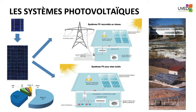Generally speaking, there are two types of photovoltaic systems. The first are those connected to the grid, where the energy is injected into the grid through an inverter. These include systems integrated in urban environments, for instance, or large power plants.